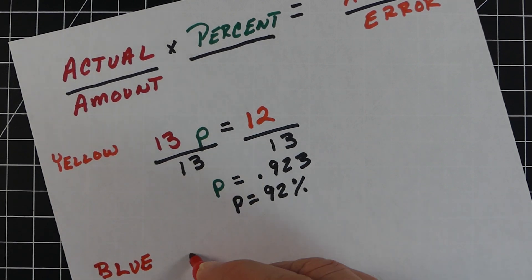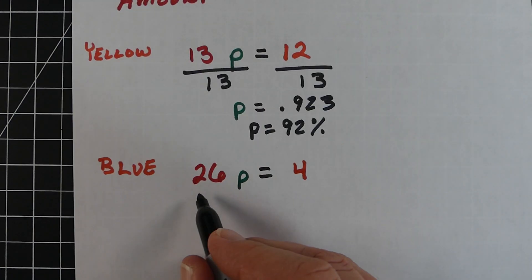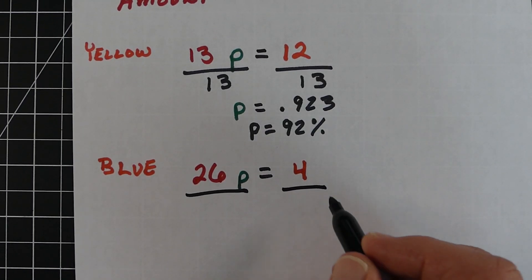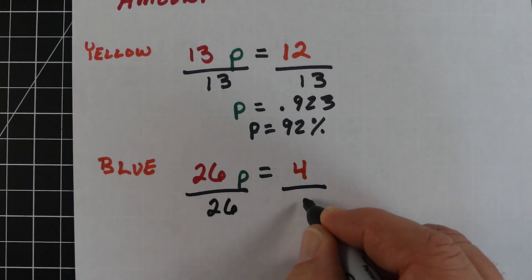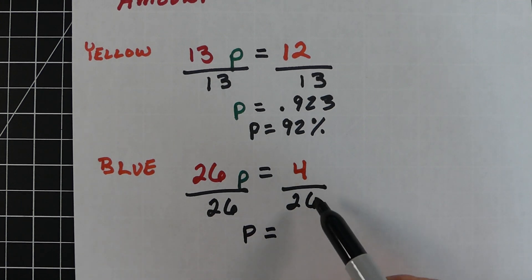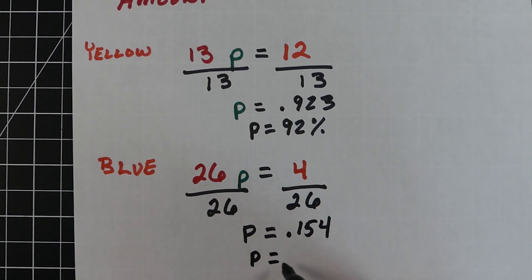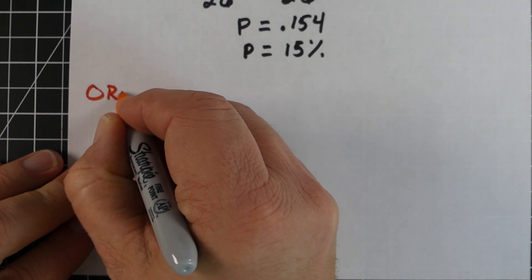Next is blue M&Ms. We really had 26 total and I was only four off, so my guess was pretty good. Just like the last one, divide both sides by 26. On the right side we end up with 0.154. Once we multiply by 100 and round, we get 15%, or 15.4% if you'd like.